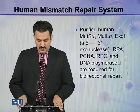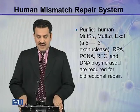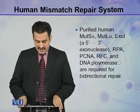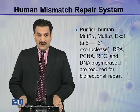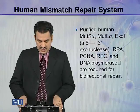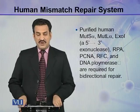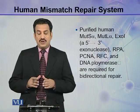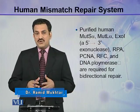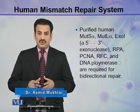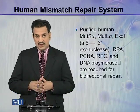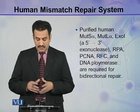Purified human MutS-alpha, MutL-alpha, Exo-1 (which is a 5' to 3' exonuclease), RPA, PCNA, RFC, and DNA polymerase delta are required for bidirectional repair. So a lot of enzymes and protein factors are required in human beings for mismatch repair, including both enzymes and protein factors.